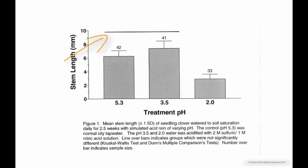It tells you the pH 3.5 and 2.0 water and how they made that. The line over the bars indicates groups which are not significantly different and tells you the statistics test they used. The number over the bar tells you the sample size, how many clovers were in each group. So this caption is very clear and explains everything we need to understand without reading the paper.